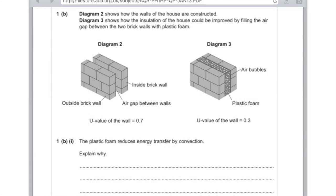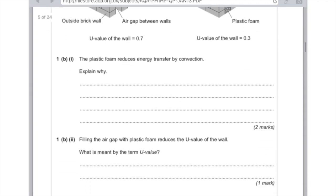Diagram 2 shows how the walls of the house are constructed. Diagram 3 shows how insulation could be improved by filling the air gap between the two brick walls with plastic foam. The plastic foam reduces energy transfer by convection. Explain how. Air bubbles are trapped in the foam and therefore air cannot circulate, so no convection current can be set up.